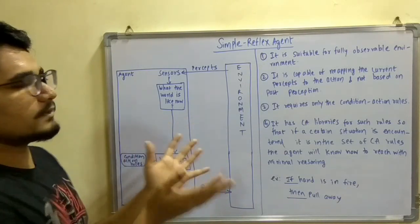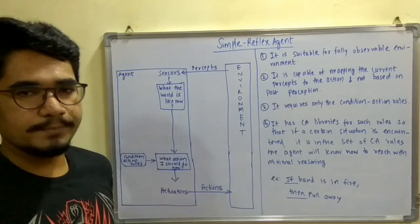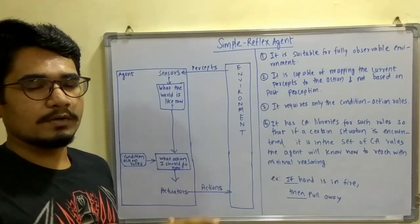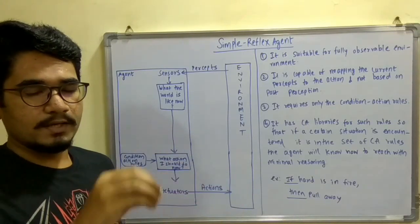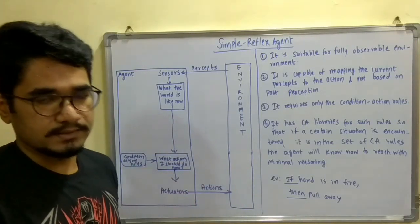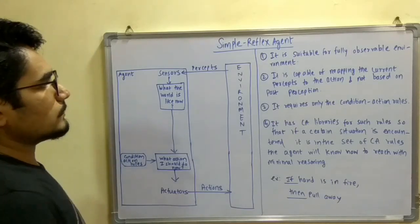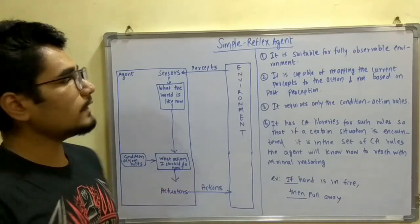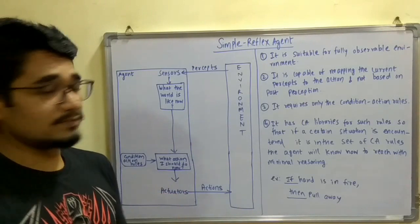It's simply a simple reflex, like in human beings we do. If we sense any hot thing, or if any hot ion is there, and if it senses our skin, then we immediately take our hand off back. That's about the simple reflex agent in artificial intelligence.